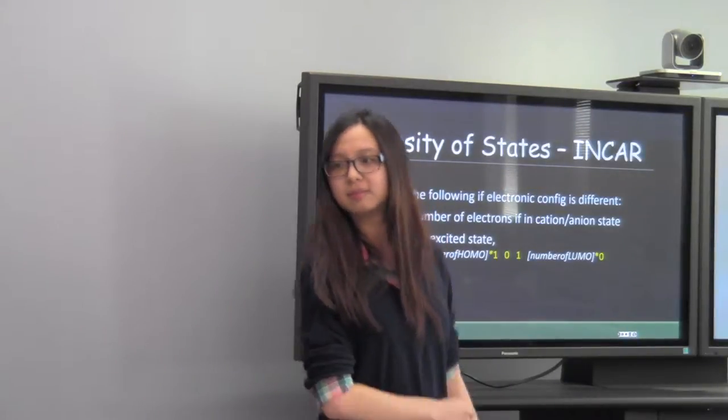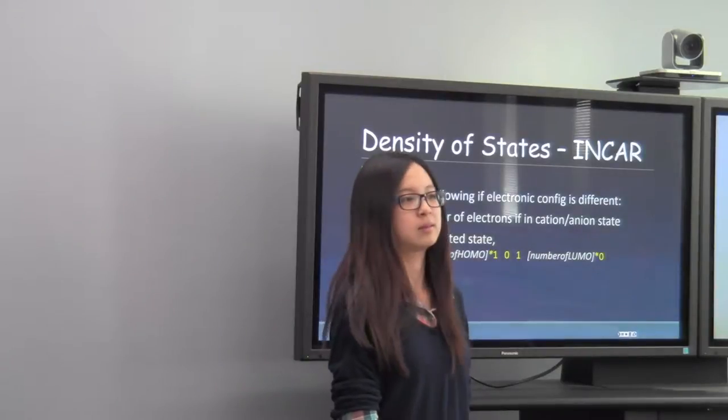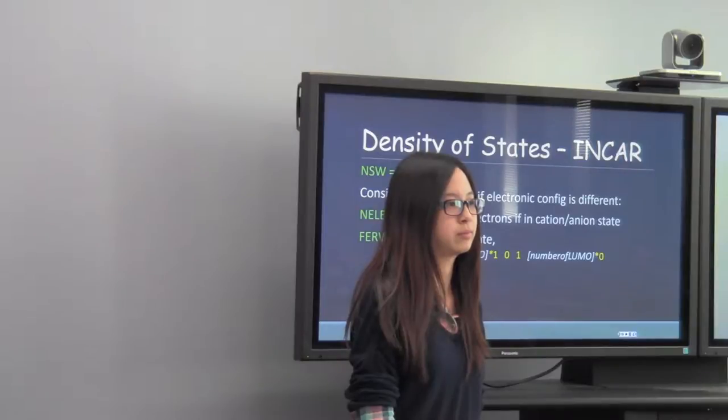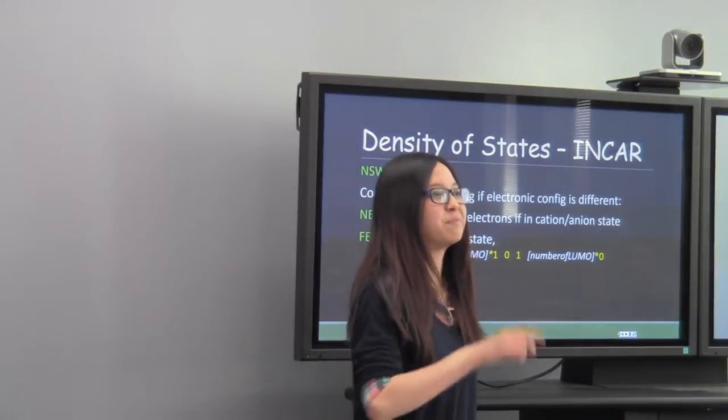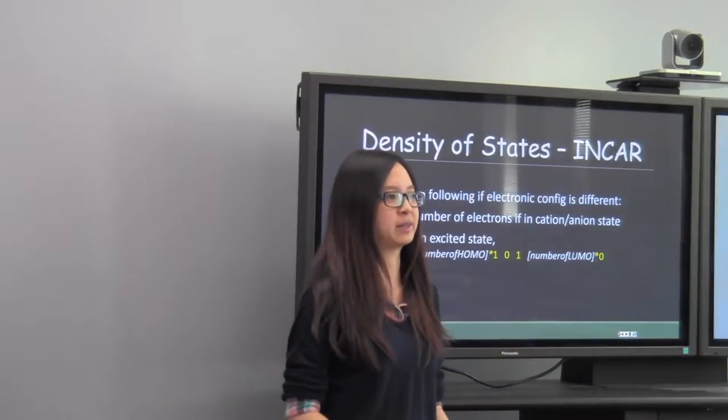You say number of HOMO times 1, 0, 1, number of LUMO. Are you adding two additional states to your number of LUMO? Oh, sorry, minus 1. The total should come to the number of LUMO. Good idea.